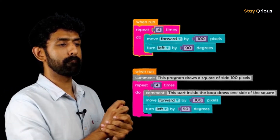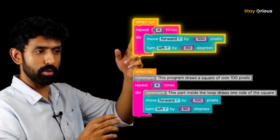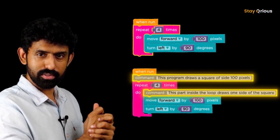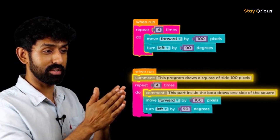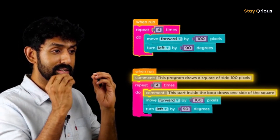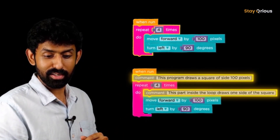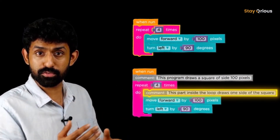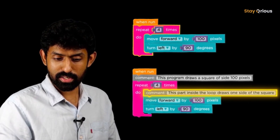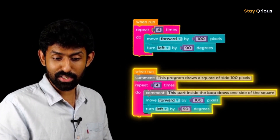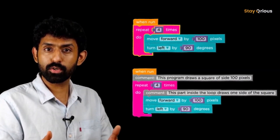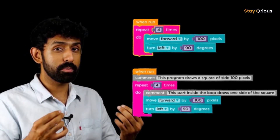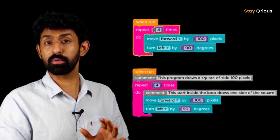Now let me show you something new. I'm taking that repeat block code and adding something called comments. Have you ever used the comment block before? It's the easiest coding block to learn because it's the block you write just to communicate to other human beings — the computer ignores it. So here I'm writing: 'This program draws a square of side 100 pixels.' And inside: 'This part draws one side of the square.' That makes it clearer and easier to read — even though it's longer. Which takes longer to run? Both have equal steps; the computer just ignores the comment.